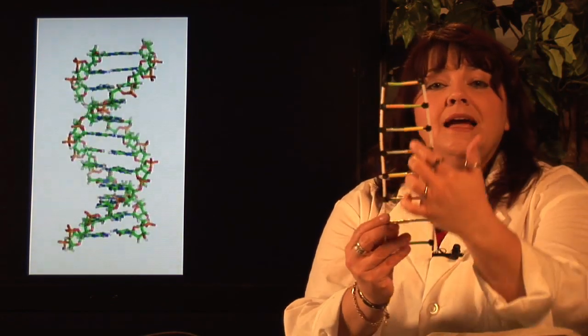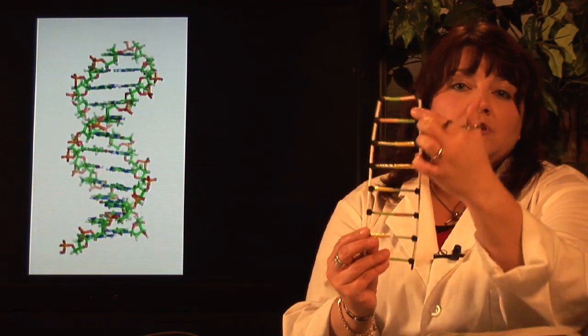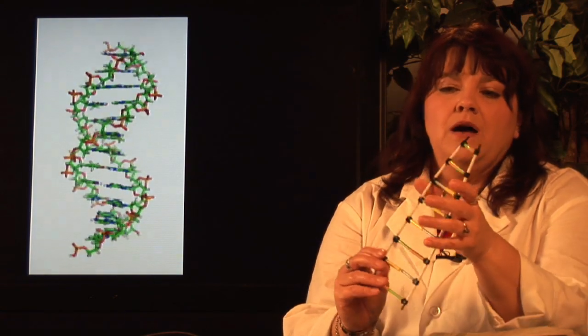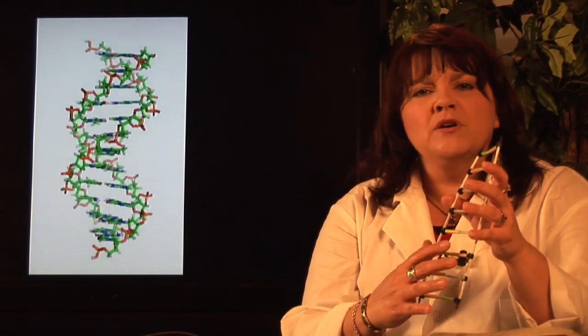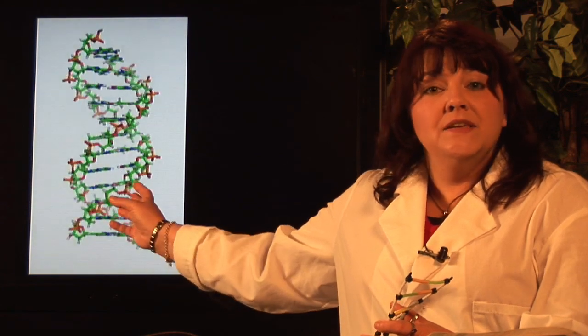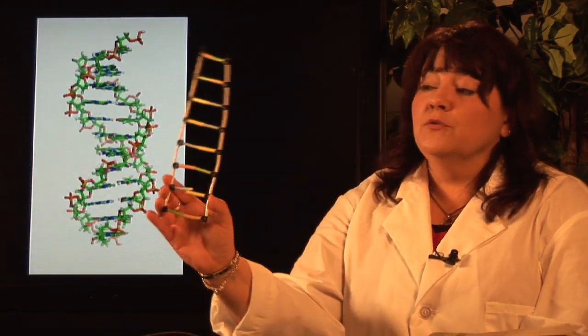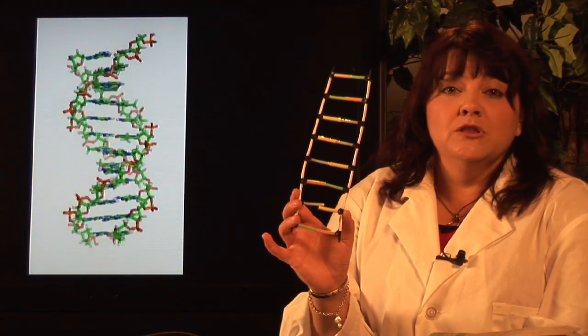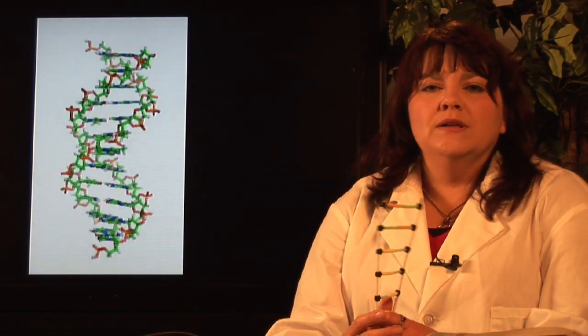These two strands are connected by something called hydrogen bonds. It's important to recognize that a DNA model consists of small twists. If you were to untwist it, it would look like a ladder.